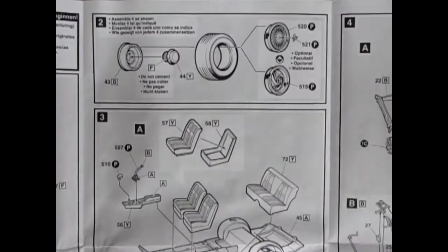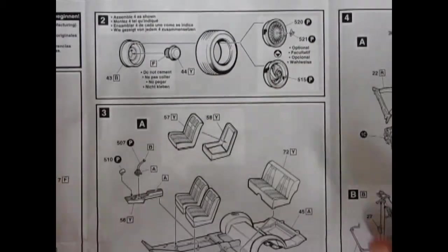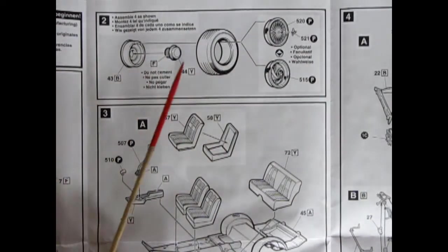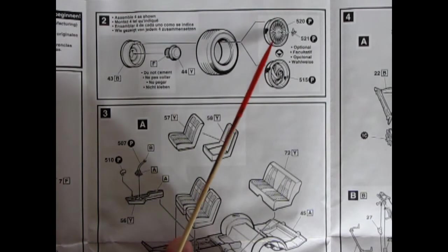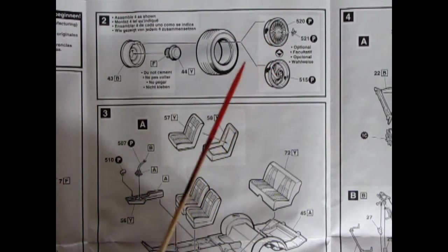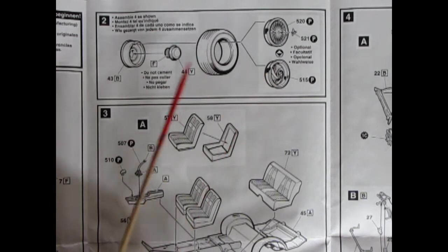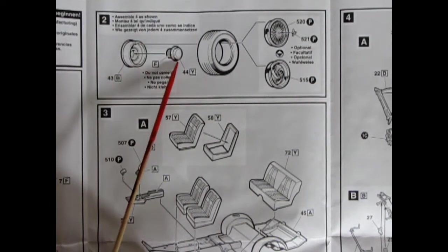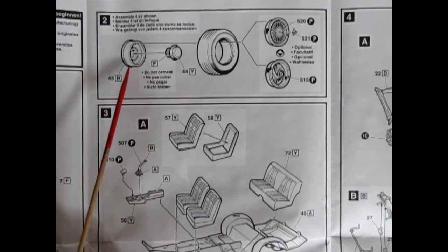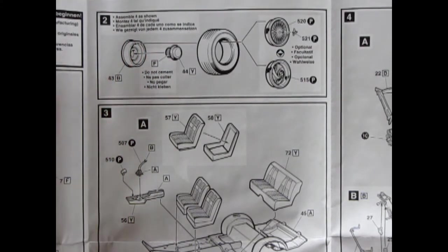Moving across to panel number two. We have our wheel assembly. And there's our tire there. You get your choices of the wire wheels with the little knockoffs on there. Or the custom wheels. And then of course we've got this here for mounting to the suspension. And our wheel back right there.